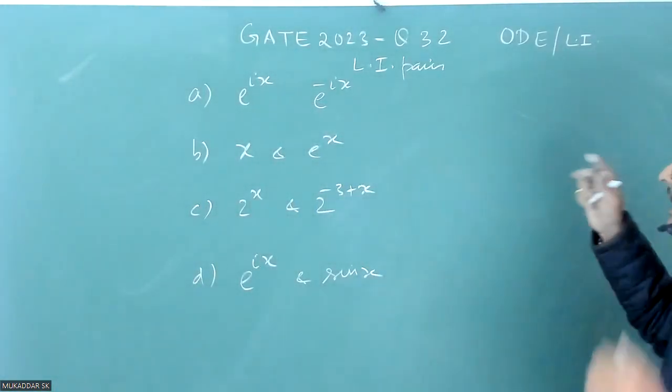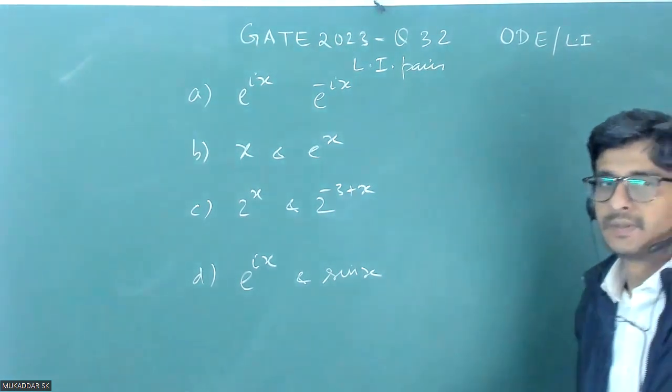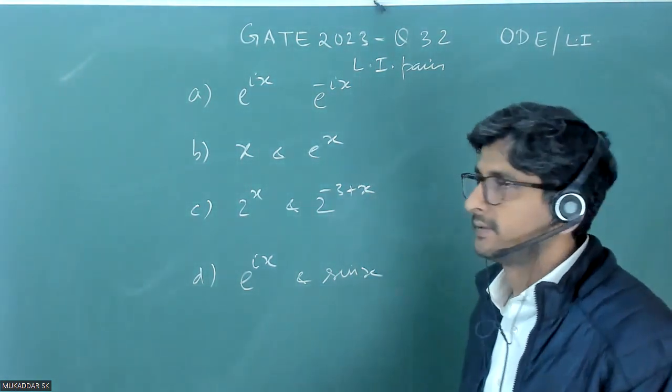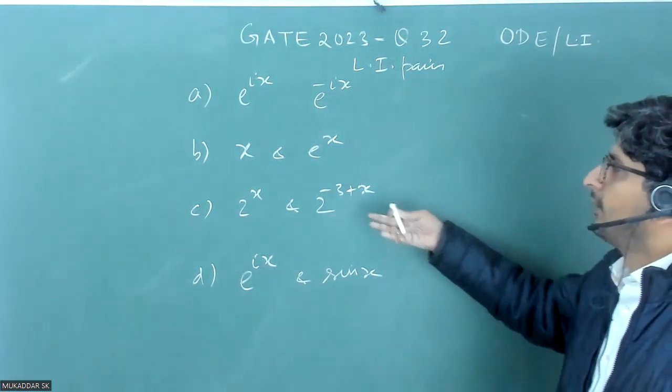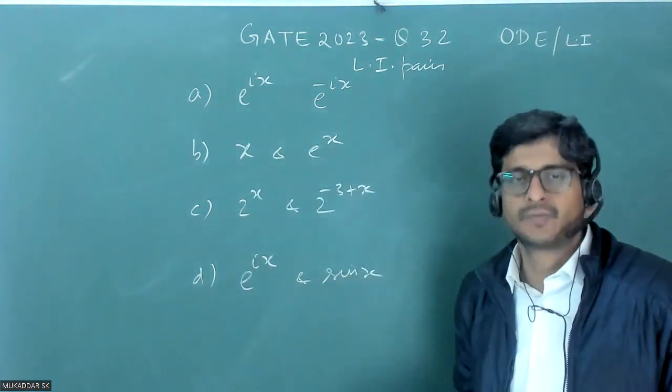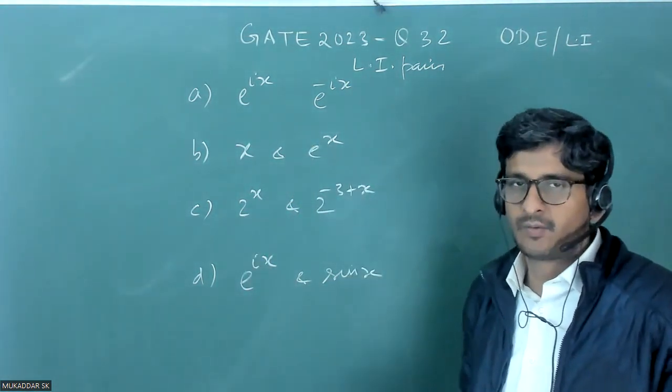This is a question in which they have asked which one of the following represents linearly independent pairs. So suppose we may take it as there are some solutions of second order ordinary differential equation.